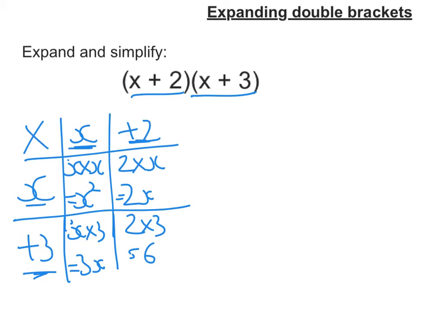Now taking the four terms that I've just made, these two and these two, I'm going to write them in a line. So we've got x squared plus 2x plus 3x plus 6.